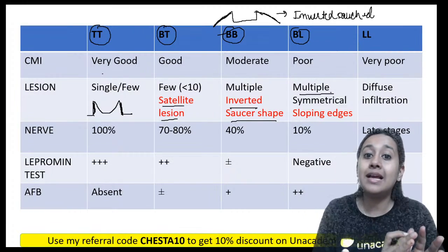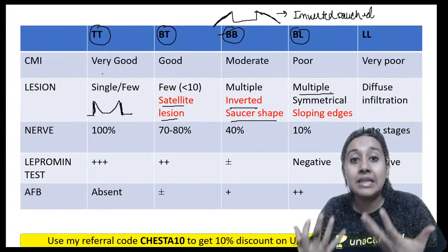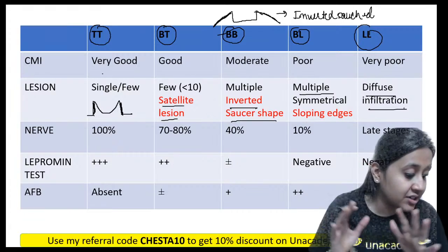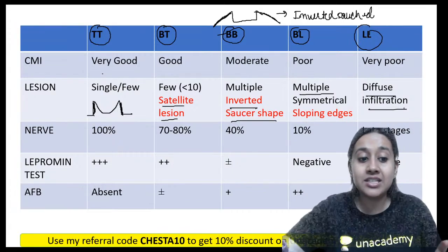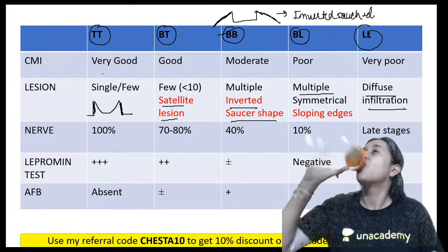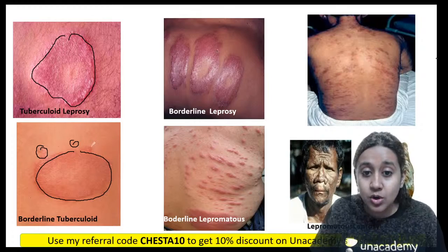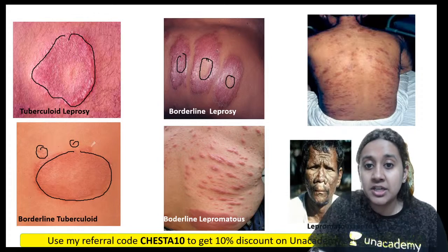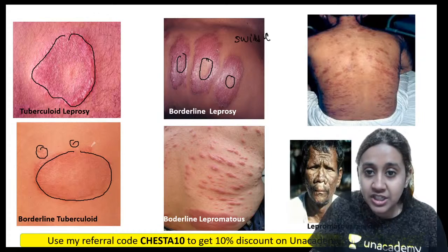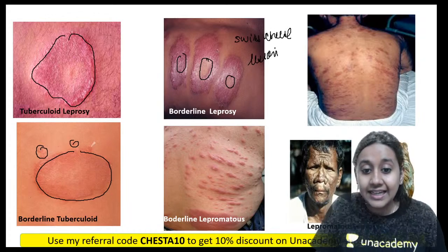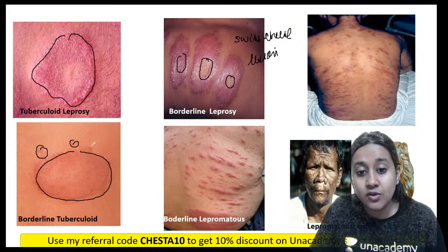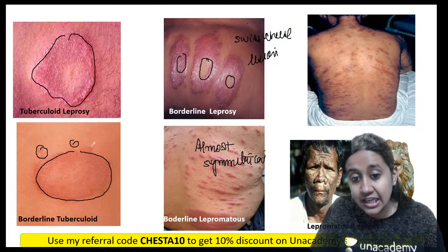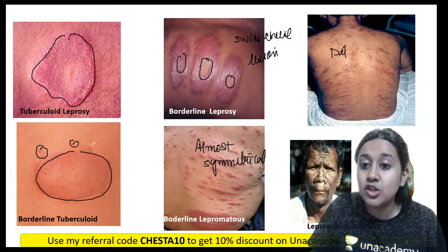As we move to borderline lepromatous, lesions are multiple and almost symmetrical — similar to borderline borderline but now with multiple lesions. In lepromatous leprosy, there is diffuse infiltration with symmetrical lesions throughout. Borderline borderline shows punched-out or inverted saucer-shaped lesions, also called swiss cheese lesions. Borderline lepromatous shows almost symmetrical lesions, while lepromatous leprosy shows diffuse lesions.